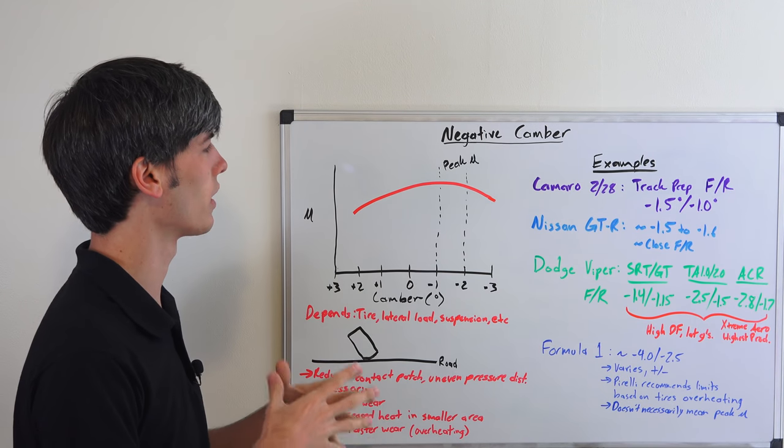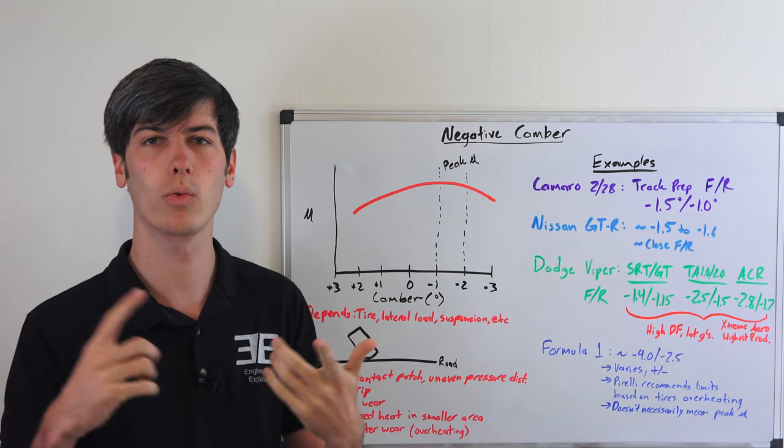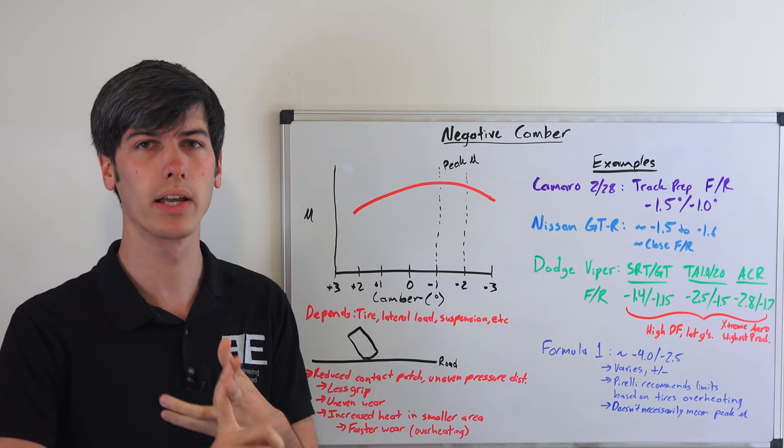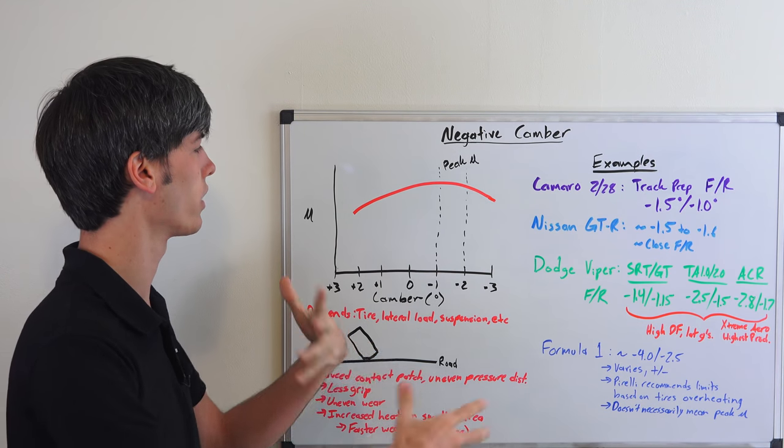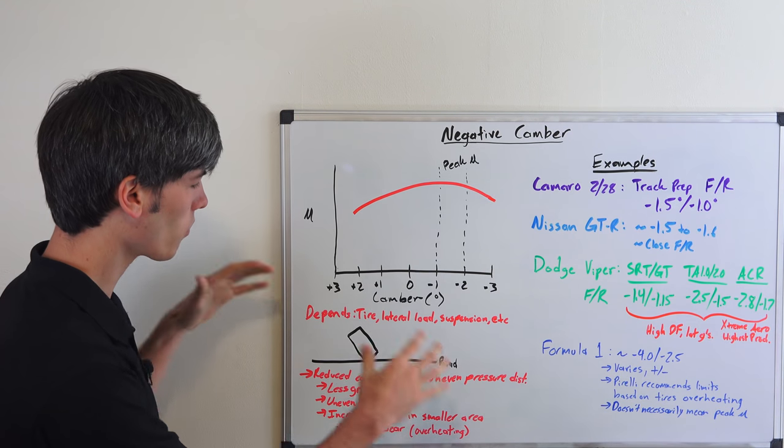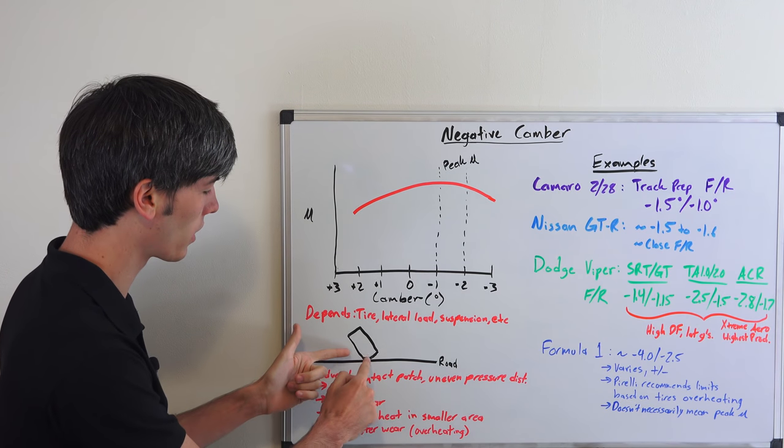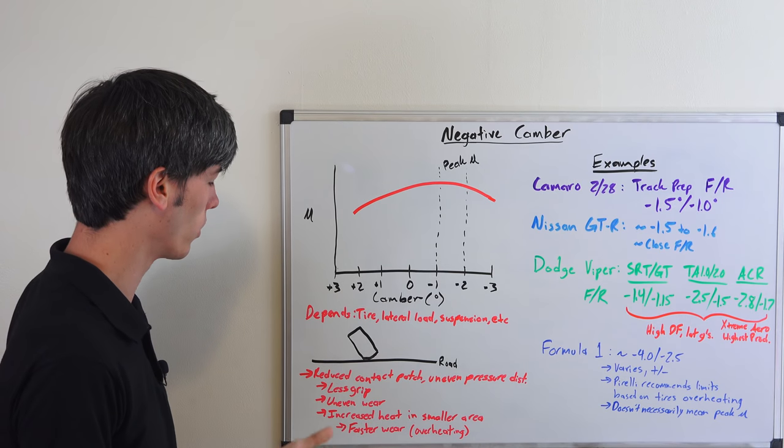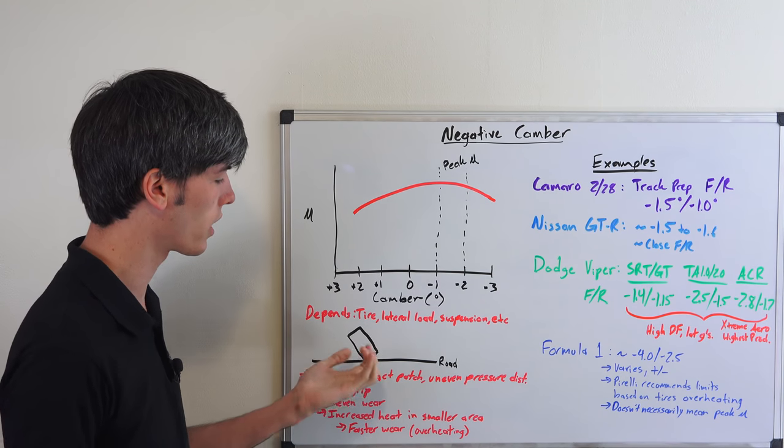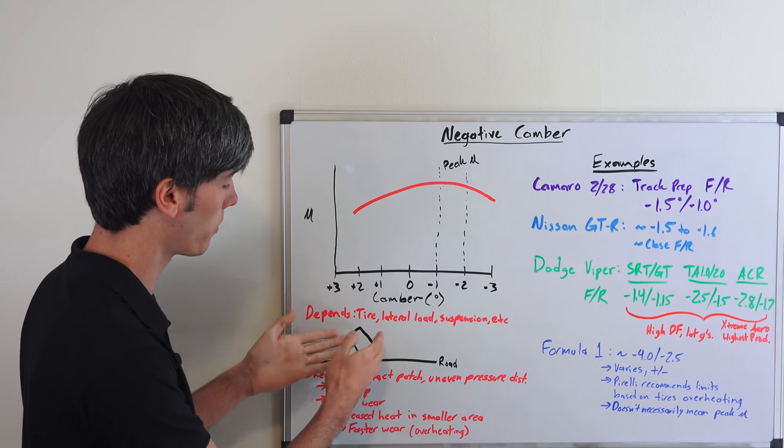If you haven't yet watched my video on camber or camber kits, you may want to check those out if you don't understand the background behind this. If you do have a tire and you give it too much negative camber, so it looks something like this as it's driving down the road, what you're doing is you're reducing the contact patch.